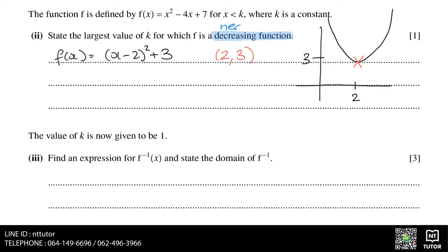A function is decreasing when the gradient is negative, and from our sketch, we can see that the gradient is negative to the left-hand side of the vertex. This corresponds to x coordinates of 2 and less.